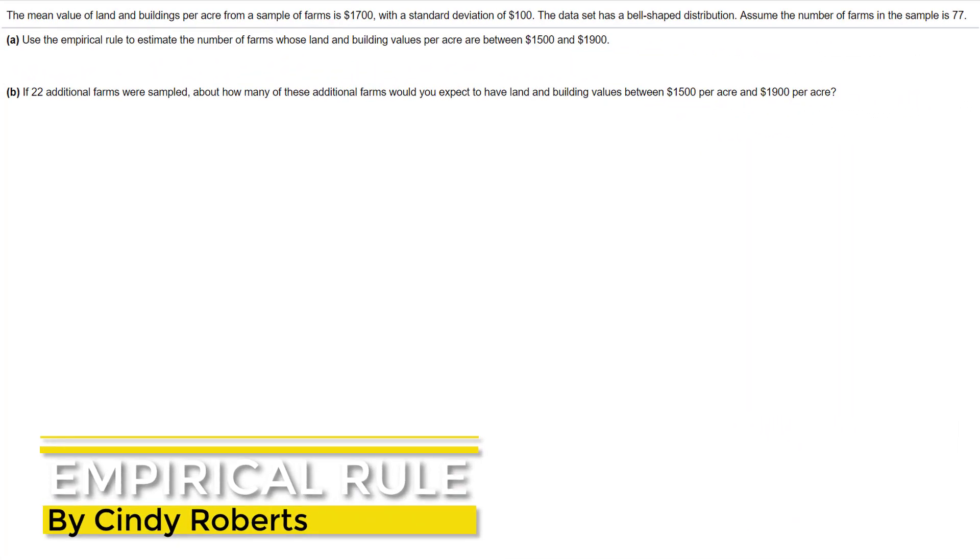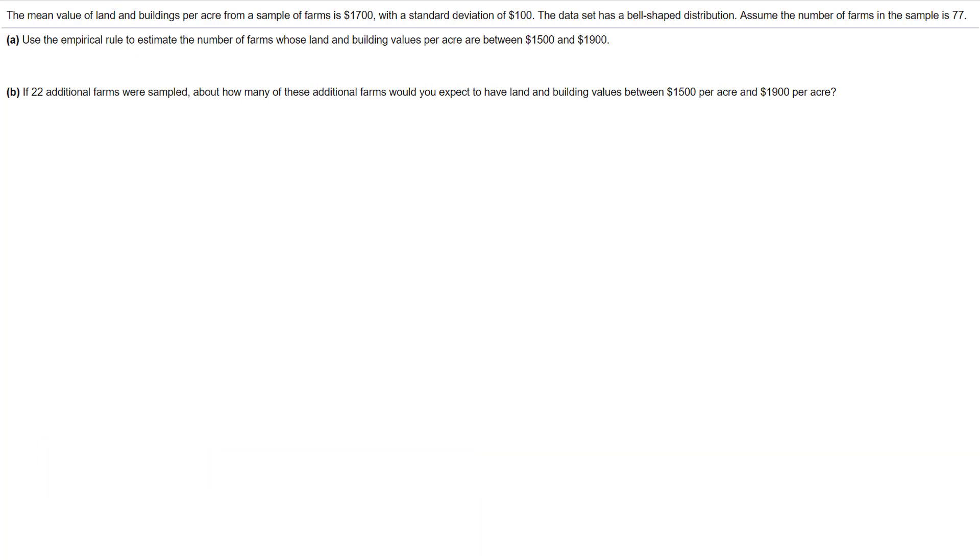We're given information about the mean value of land and buildings at a sample of farms, which is $1,700, with a standard deviation of $100. The data has a bell-shaped distribution, so let's draw a picture of a bell-shaped curve, and right down the middle is my mean.